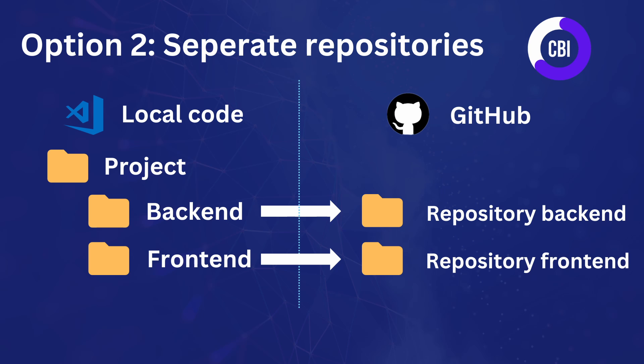The second option is to deploy in separate repositories. That means you initialize Git in your backend and also in your frontend, create two GitHub repositories — one for each — and push each codebase to its respective repository. This means you need to update both repositories when changes are made and do the setup twice. However, your backend is completely separated from your frontend, so a backend change only triggers a redeploy of the backend, not the frontend.